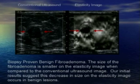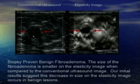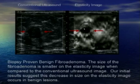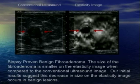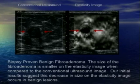Here's a benign fibroadenoma — a taller-than-wider lobular mass on B-mode, so a BI-RADS IV lesion. It clearly gets smaller on the elastogram. We also see a ring artifact around the lesion secondary to the lesion moving in and out of plane during image acquisition.